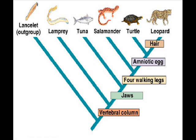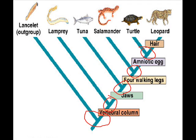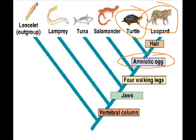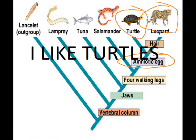If you look at this tree, you will see that there are many different animals on it. Each branch point on the tree represents the common ancestor of all the species that descend from it. For example, all animals descended from the highlighted branch point. This also shows the different homologies that these creatures have in common — for example, only turtles and leopards have the amniotic egg in common.